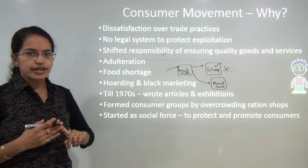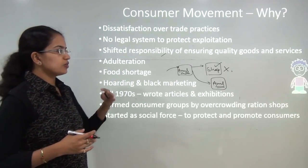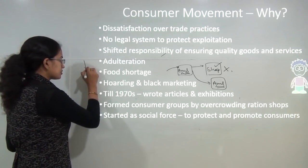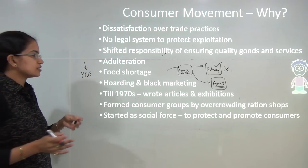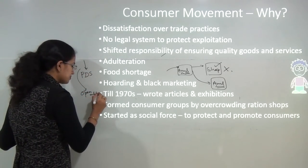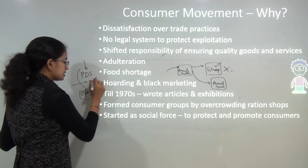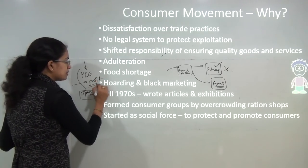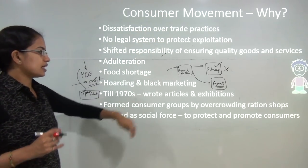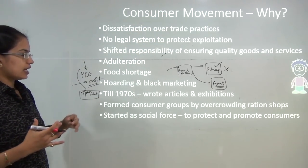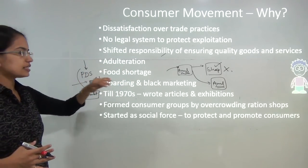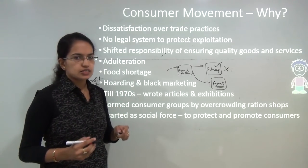There is also adulteration in food items, hoarding, and black marketing of supply that goes into the Public Distribution System (PDS). All the supply that goes into the PDS at a subsidized price is leaked into the open market at a higher price, generating profit for middlemen. To rule out all these problems, consumer movements started — the idea was to curb black marketing and hoarding and address existing food shortages.